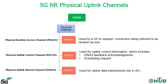Looking at 5G New Radio Physical Uplink Channels in more detail, the Physical Random Access Channel is used by user equipment to request connection setup — referred to as a random access request — from UE to gNodeB to access the network. The Physical Uplink Control Channel carries uplink control information, including HARQ feedback acknowledgement indicating whether downlink transmission was successful, scheduling requests for time-frequency resources, and downlink channel state information for link adaptation. The Physical Uplink Shared Channel is used for uplink data transmission by user equipment.